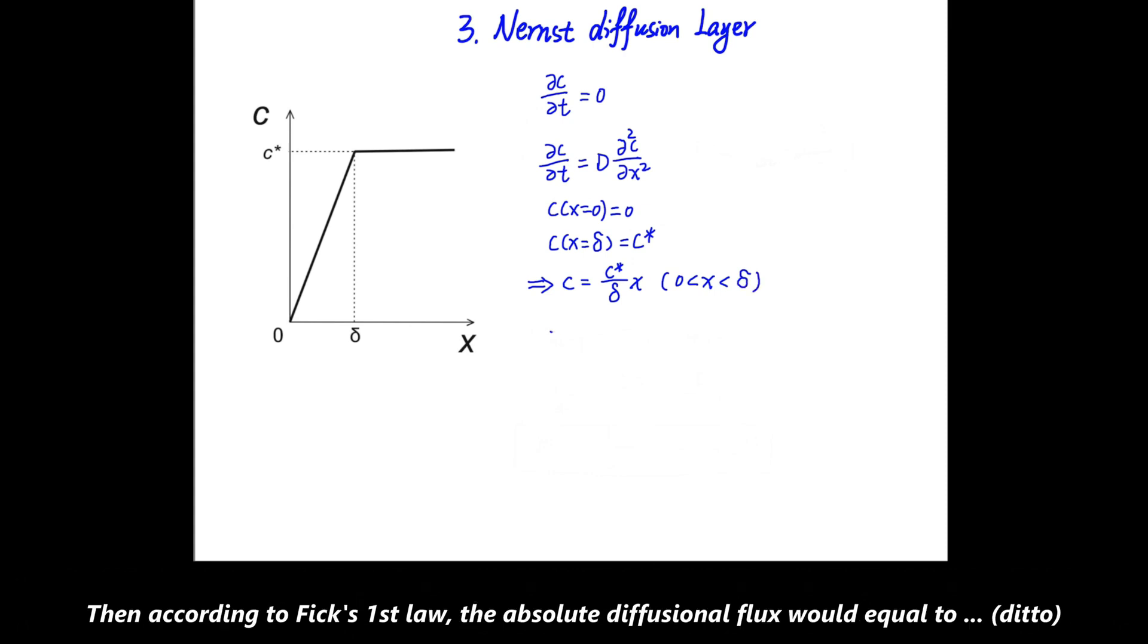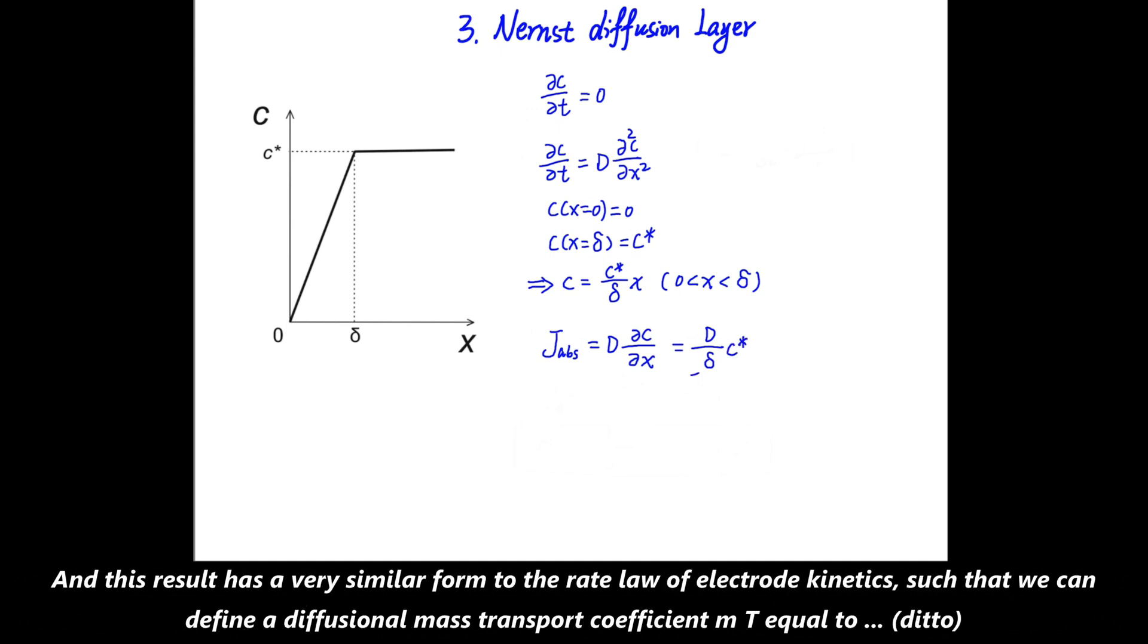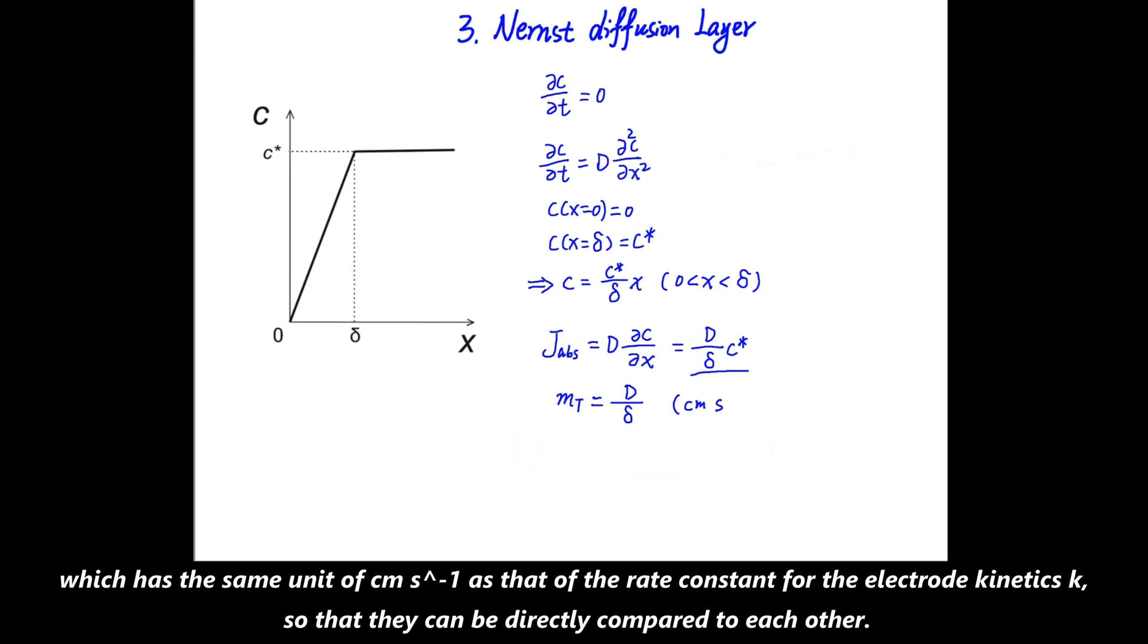Then, according to Fick's first law, the absolute diffusion flux would be equal to D·∂C/∂x, which further leads to (D/δ)·C*. And this result has very similar form to the rate law for the electrode kinetics, such that we can define the diffusional mass transport coefficient MT = D/δ, which has the same unit of cm/s as that of the rate constant for the electrode kinetics, K, so they can be directly compared to each other.